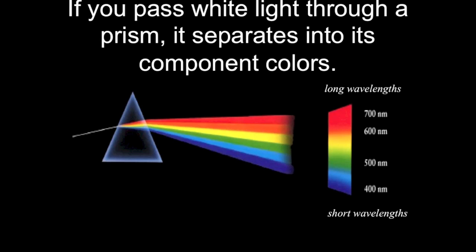You probably know that if you take white light and pass it through a prism, you can separate it into the colors that make it up, everything from red to blue.